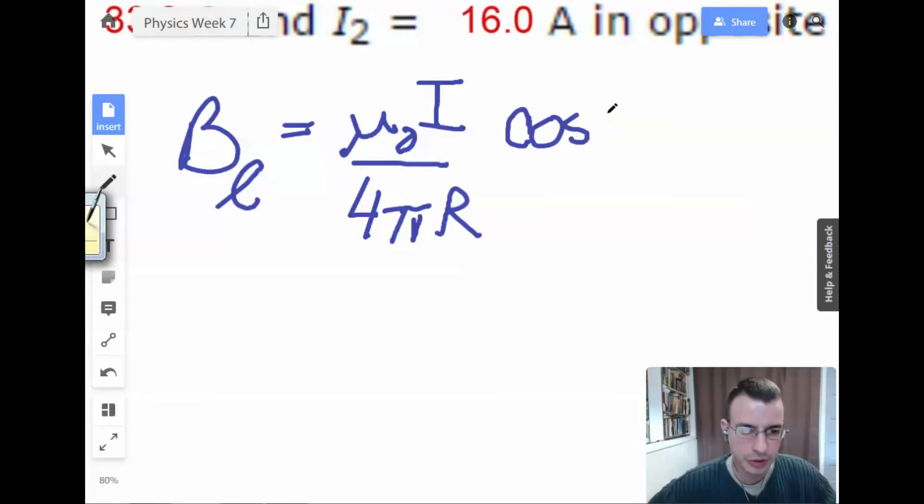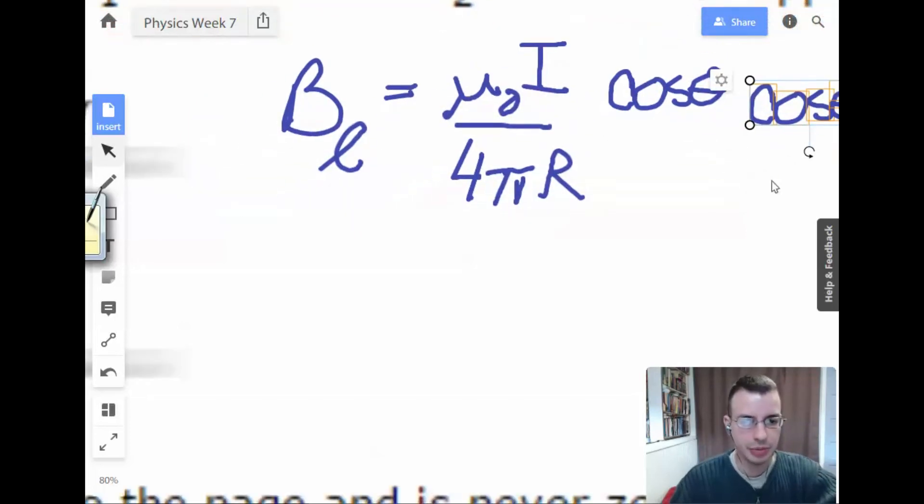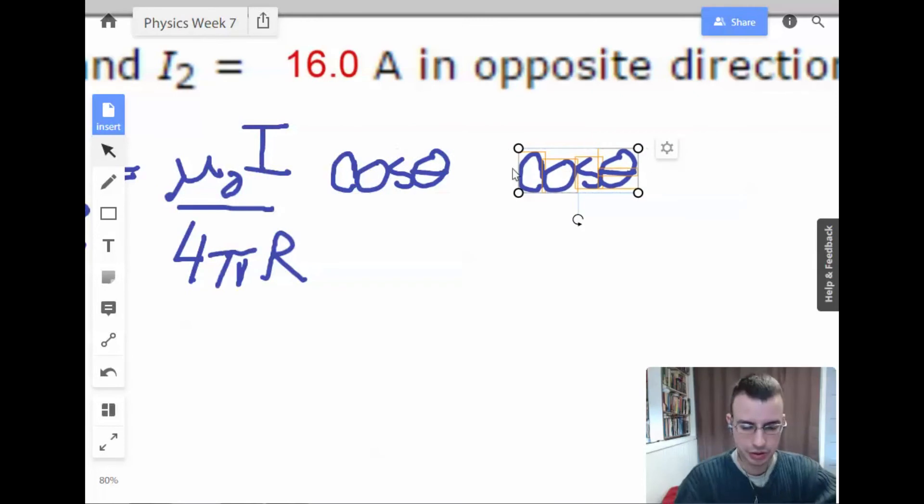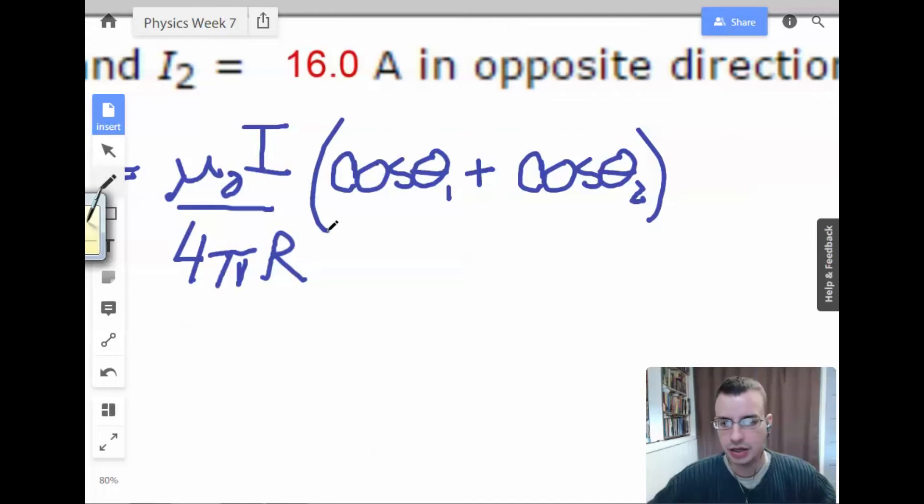And we're going to multiply this by cosine theta one plus cosine theta two.